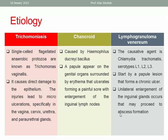For trichomoniasis, the causative organism is a single-cell flagellated anaerobic protozoa known as Trichomonas vaginalis. Chancroid is caused by Haemophilus ducreyi bacillus. Lymphogranuloma venereum is caused by Chlamydia trachomatis serotypes L1, L2, and L3 — so Chlamydia has different serotypes, and the types that cause LGV are L1, L2, and L3.